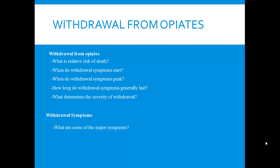The withdrawal symptoms can start anywhere from 6 to 12 hours after the last administration of the drug. They're generally going to peak between 26 to 72 hours, and then most of the opiate withdrawal symptoms are over within a week. The severity of withdrawal symptoms really depends on the daily dose that the user is administering — the larger the dose, potentially the more severe the withdrawal symptoms.